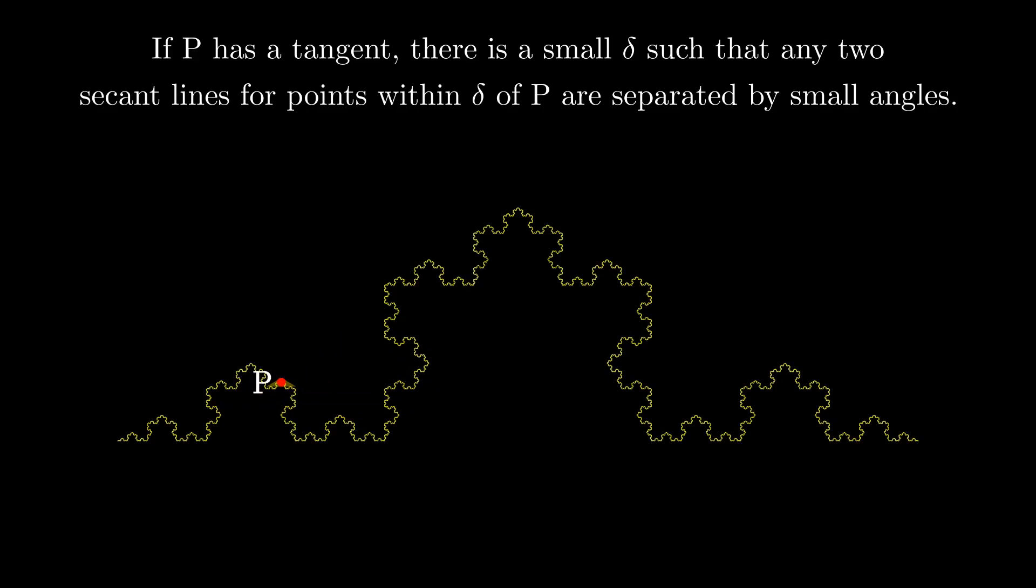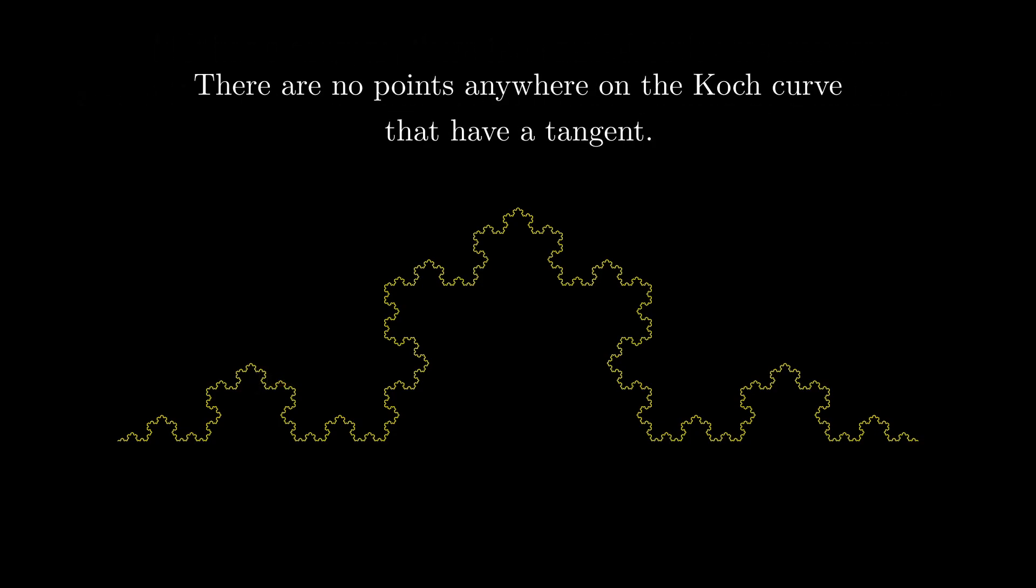Therefore, there cannot be a tangent at the point P. And since P was an arbitrary point on the Koch curve, this shows that there are actually no points anywhere on the Koch curve that have a tangent.